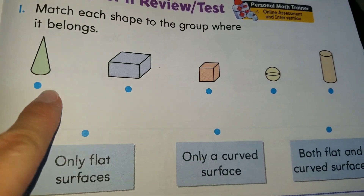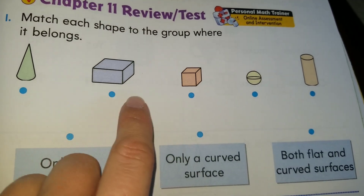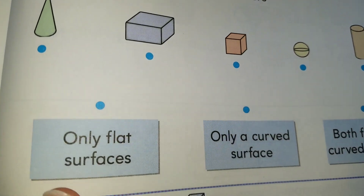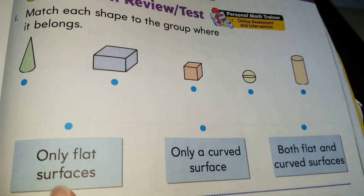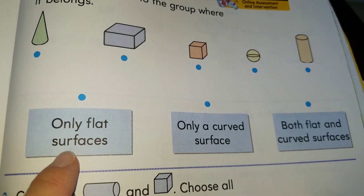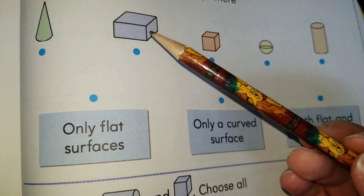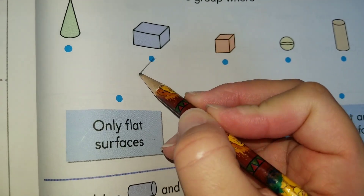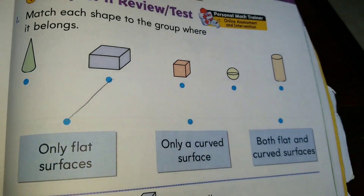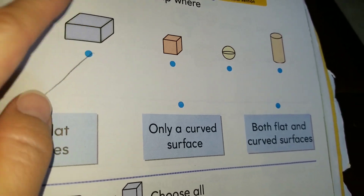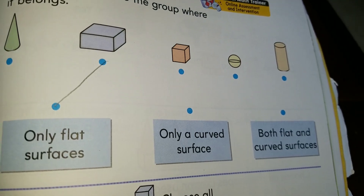Over here we have a cone, a rectangular prism, we have a cube, a sphere, and a cylinder. Once again, we have a cone and a cylinder, and we are going to connect these shapes to the descriptions over here. It says 'only flat surfaces.' Which are the shapes that have only flat surfaces? One of the shapes that have flat surfaces is this one — one of the figures where all the surfaces are flat. This is one of them.